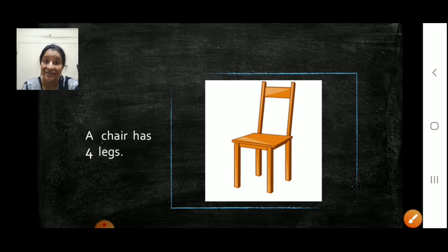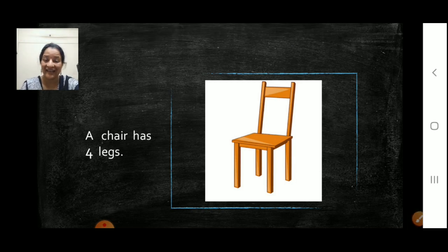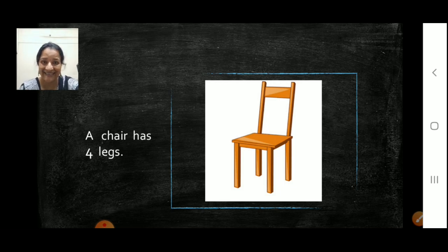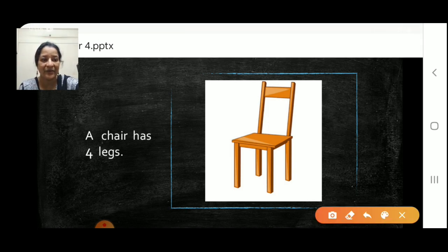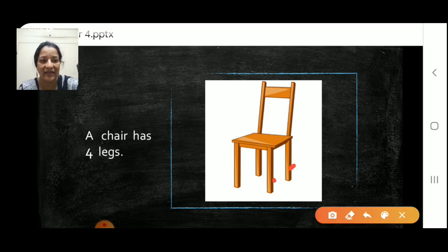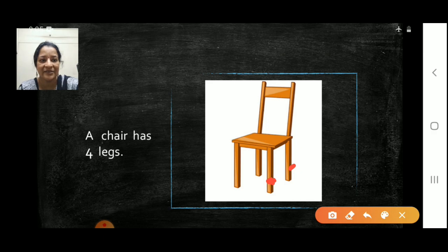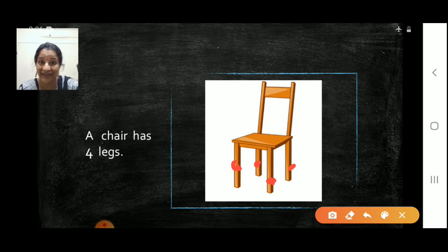Next, chair — the teacher's chair. In the classroom we have one table and one chair for the teacher, correct. A chair has four legs. Now what are legs here? These are the legs. One, two, three and four legs. Your dining table chairs — four legs. Correct.